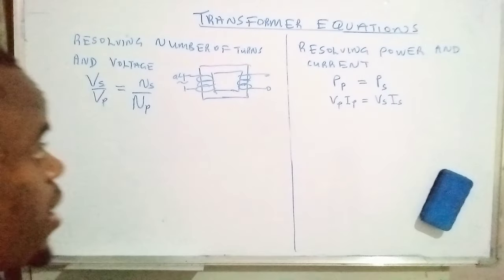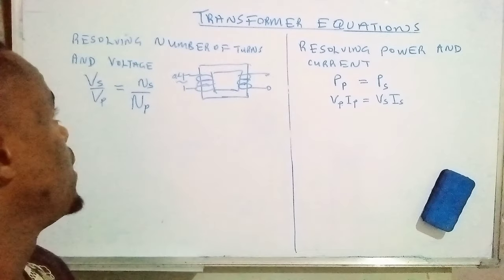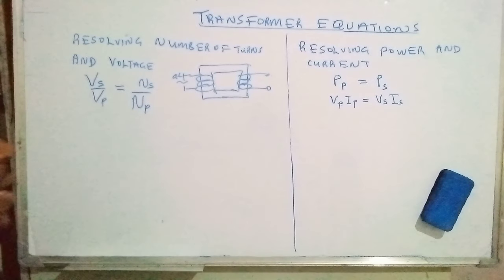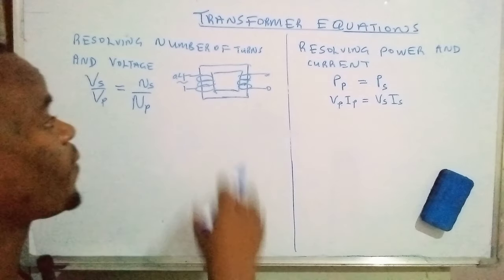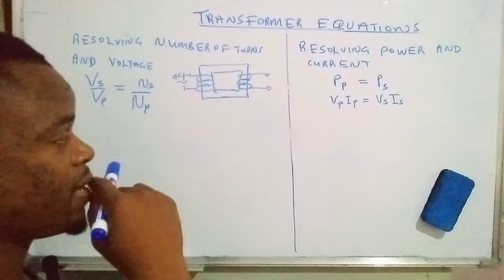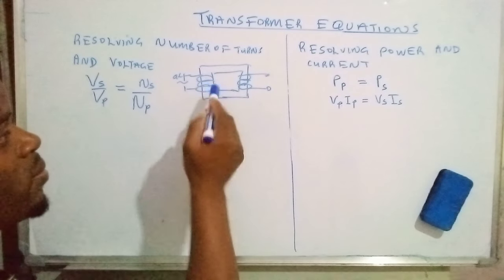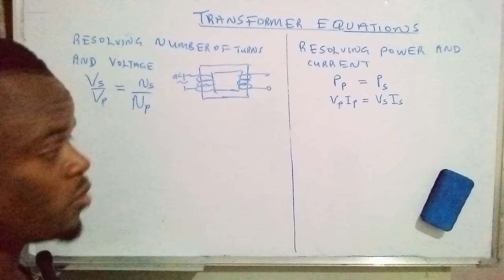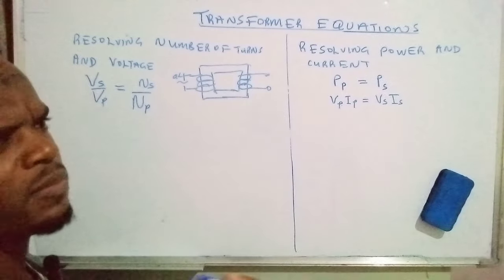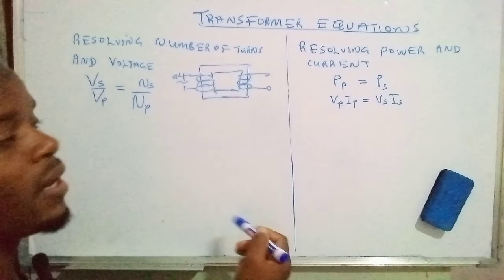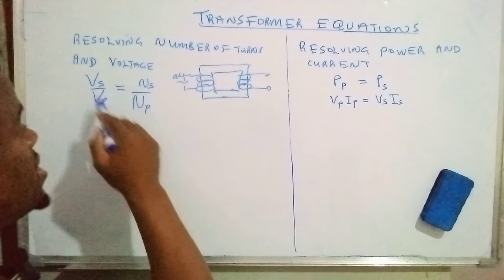These are equations that we apply when dealing with an ideal transformer. Here is a diagram denoting a transformer. This one is actually the primary coil, and that one is the secondary coil. This coil has a number of turns wound on this side or arm of the transformer, and the other side also has some number of turns. When determining the number of turns on each coil, we use this equation.